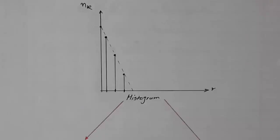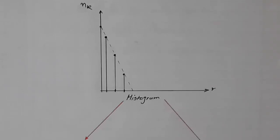Hello, welcome to Top Notch Tutorials. We have previously seen the definition of histogram and the method to improve a histogram, that is linear stretching. There exists another method called histogram equalization, which makes proper improvements to a given histogram and makes it more enhanced in contrast levels. As can be seen here, I have drawn a histogram.